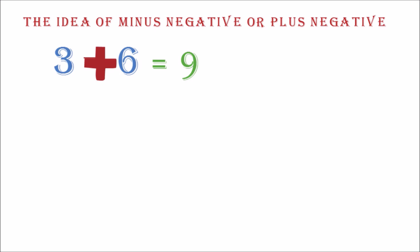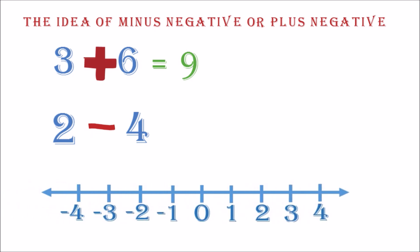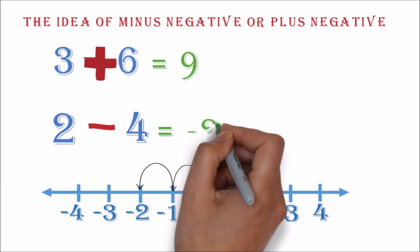Example two: two plus negative four. What you should know is that plus negative is the same as minus. This simply becomes two minus four. We can use the number line to find it. We start from two. Because it is minus, we move four to the left. This brings us to negative two.